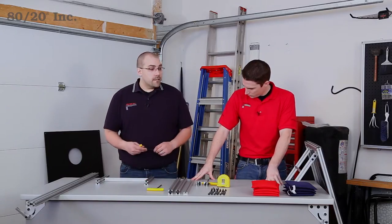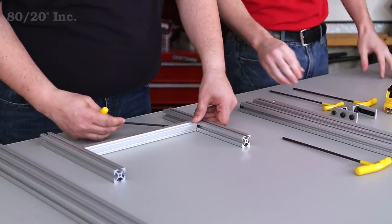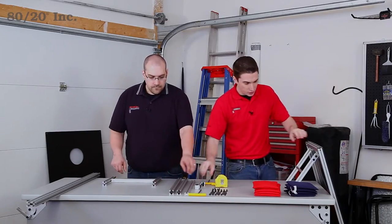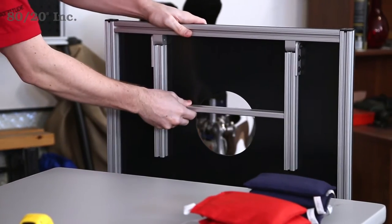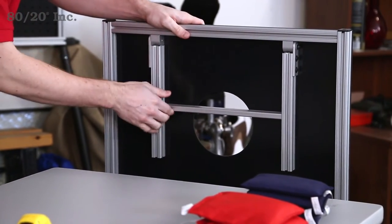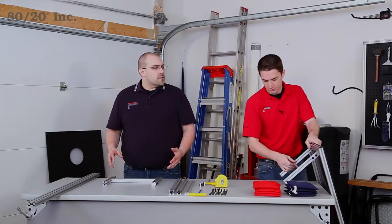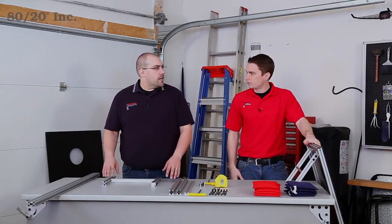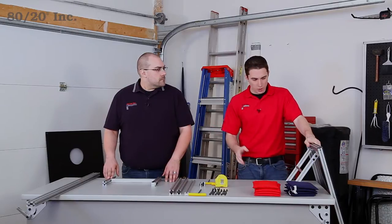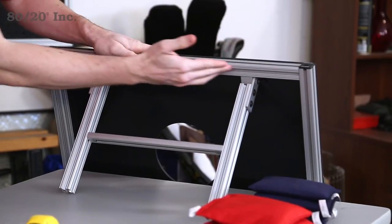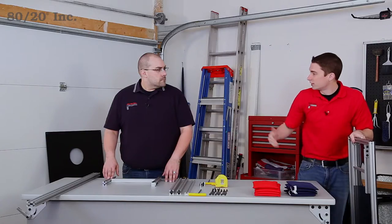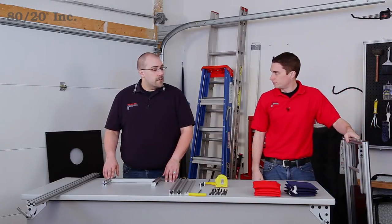Once we have that tightened down, we're going to install our pivot nuts. These are going to allow us to slide our legs underneath the cornhole board for easy transport and storage. Now why wouldn't we have just built the frame first and then put the legs on after? That's a good question. We want to be able to slide the legs onto the profile first because if we build the frame first, the profile ends will be blocked and we won't be able to get the T-nuts in.